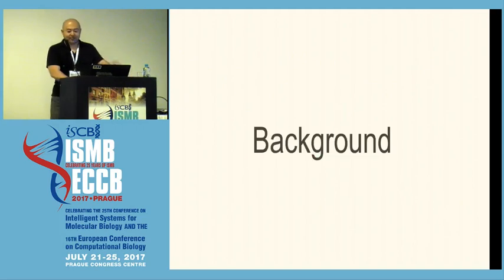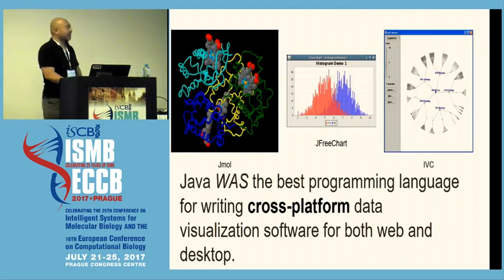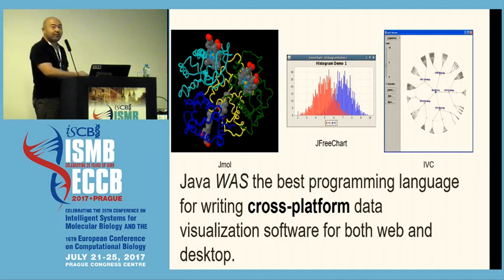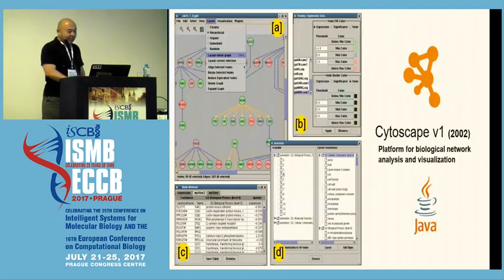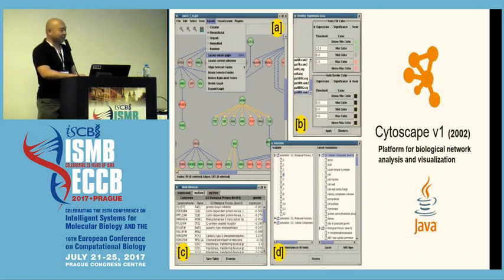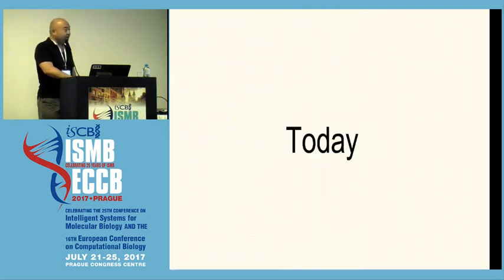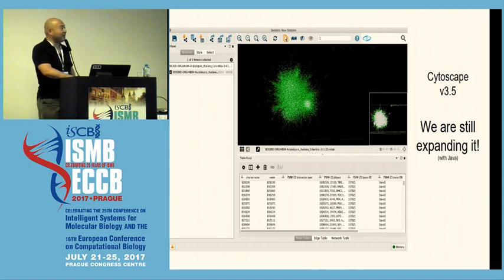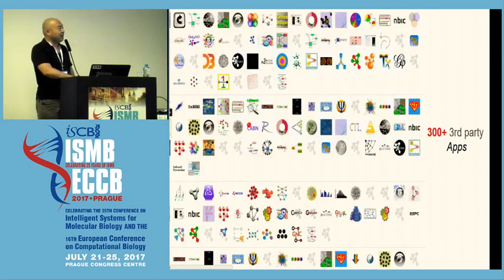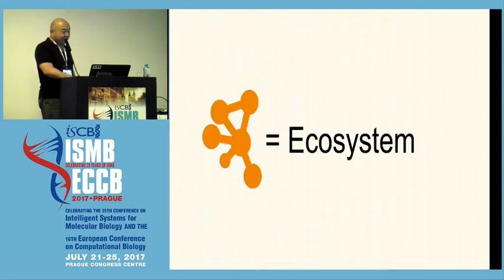Here is some background. About 15 years ago, Java was the best programming language for writing cross-platform data visualization software for both web and desktop. That's why we used Java to write this software called Cytoscape. Now it's a de facto standard platform for biological network analysis and visualization. We are at version 3.5 and still expanding. The community is still growing — we have over 300 third-party add-on software called apps for Cytoscape. Cytoscape is no longer desktop software; it's an ecosystem.